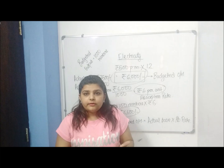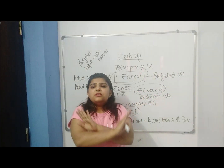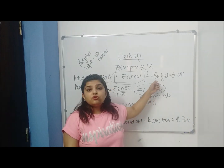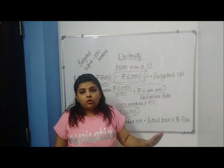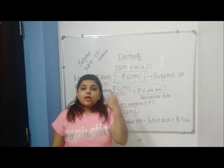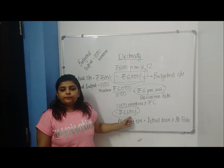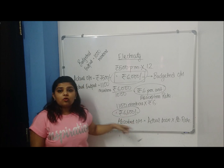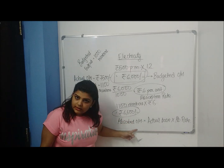Where are these overheads recorded? Budgeted overheads — we already threw that into the dustbin, it is not going to be recorded in the books at all. That leaves two overheads: actual overheads and absorbed overheads. Absorbed overheads will always come in the cost sheet. When we make a cost sheet, we never record the actual overheads — we always record the absorbed overheads.